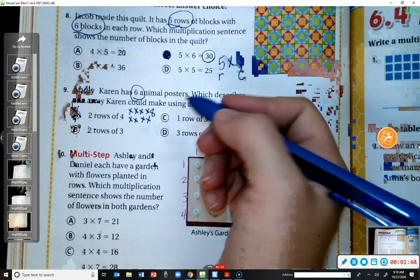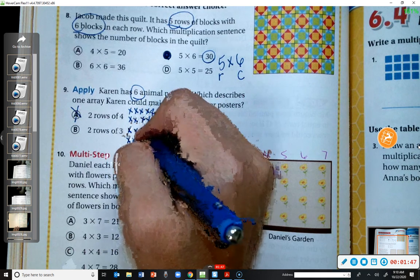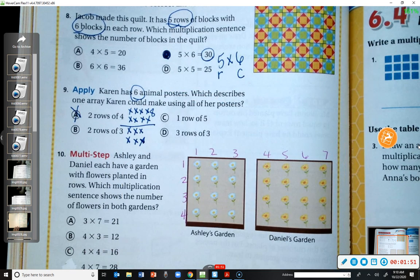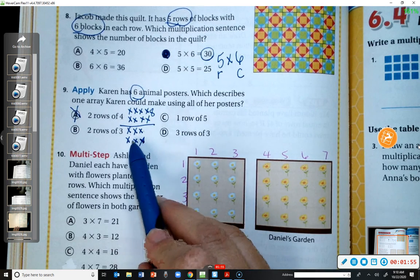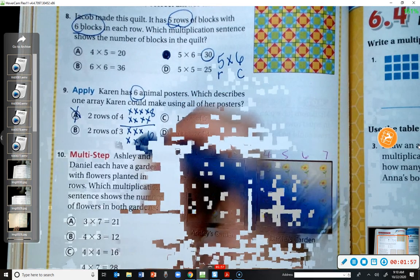B, two rows of three. So one, two, and three in each row. Does that equal six? Yes. One, two, three, four, five, six. So could that be our answer? Yeah. Okay. It could be. So let's go ahead and check the rest of them.